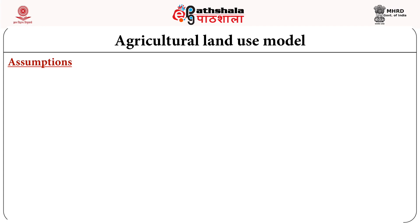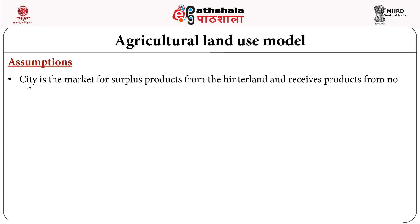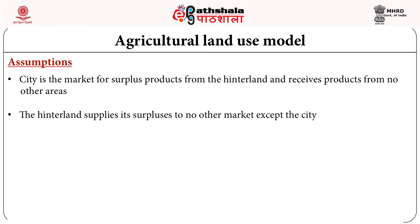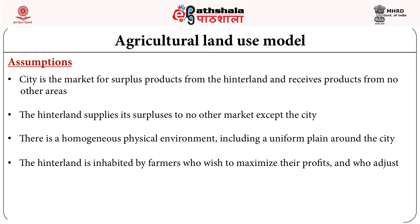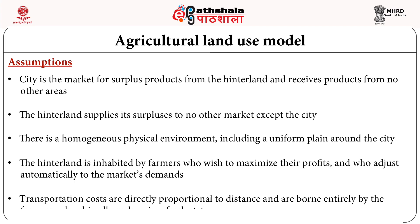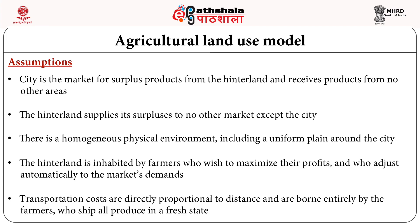The assumptions of this model were: the city is the market for surplus products from the hinterland and receives products from no other areas; the hinterland supplies its surpluses to no other market except the city; there is a homogeneous physical environment including a uniform plane around the city; farmers wish to maximize profits and adjust automatically to market demands; and transportation costs are directly proportional to distance, borne entirely by the farmers who ship all produce in the fresh state.